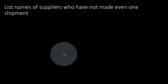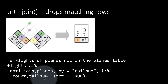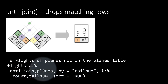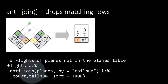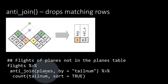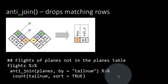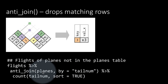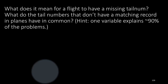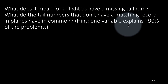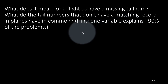Running flights anti-join planes by tailnum, count tailnum, sort equals true — we are looking at flights and keeping only those flights where the aircraft used is not in the planes table. It turns out the planes table doesn't contain information about all the planes used in 2013. You will also find that for several flights the tailnum is actually missing — a flight has an arrival time, departure time, everything, but the tailnum is NA.